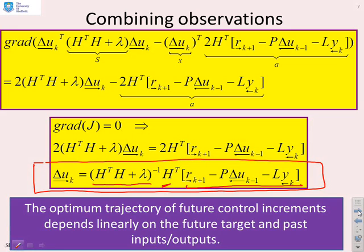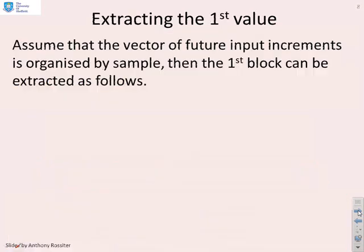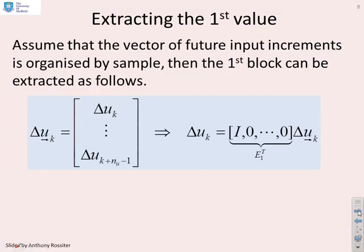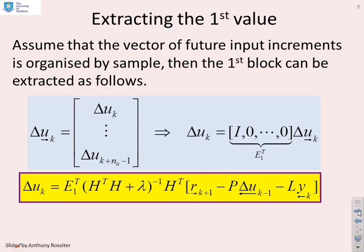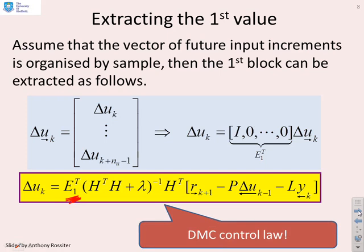And you'll see again, as before, that the optimum trajectory of future control increments depends linearly, so the keyword is linear, on the future target and the past inputs and outputs, and that's exactly the same as GPC. Obviously, as before, all we want to do is extract the first value, and therefore the control law reduces to this one here, where all we've done is multiply by this E1 transposed. And there's our DMC control law.